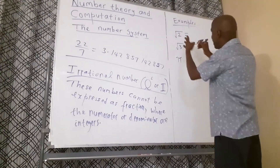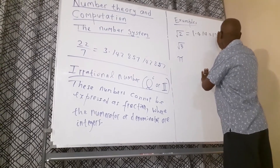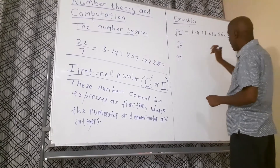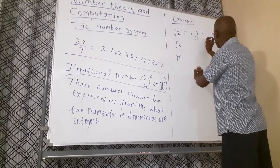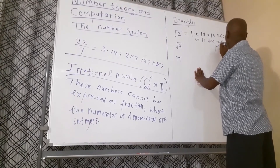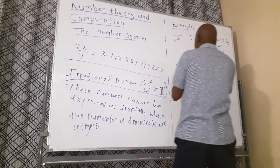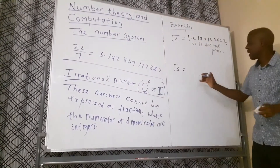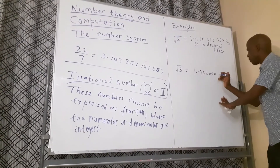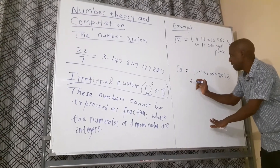For instance, the square root of 2 can be expressed to ten decimal places as 1.4142135623... and so on. Similarly, the square root of 3 can be expressed as a decimal like 1.7320508 and so on — that is expressed to ten decimal places.